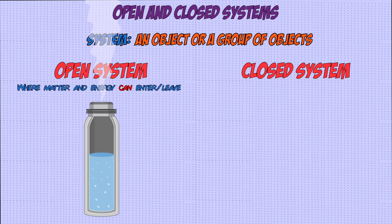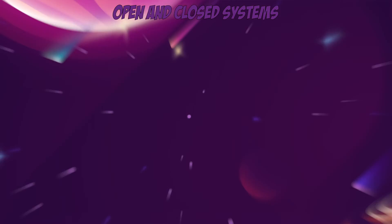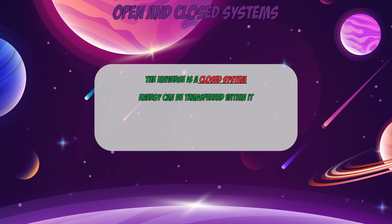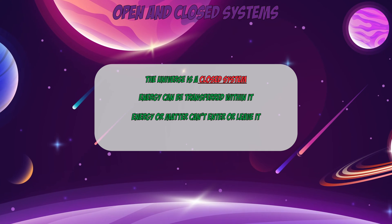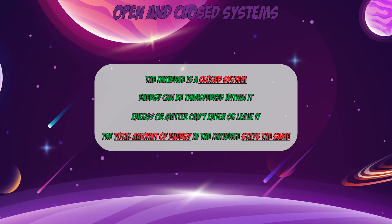A closed system is one where matter or energy can't enter or leave. Imagine we closed the flask and it was very well insulated — no matter can be added or taken away, and no energy should ideally get in or out, meaning the water should stay at the same temperature. We can say that the whole universe is a closed system, as even though energy can be transferred within it, no matter or energy can enter or leave it. The total energy within the universe always stays the same.